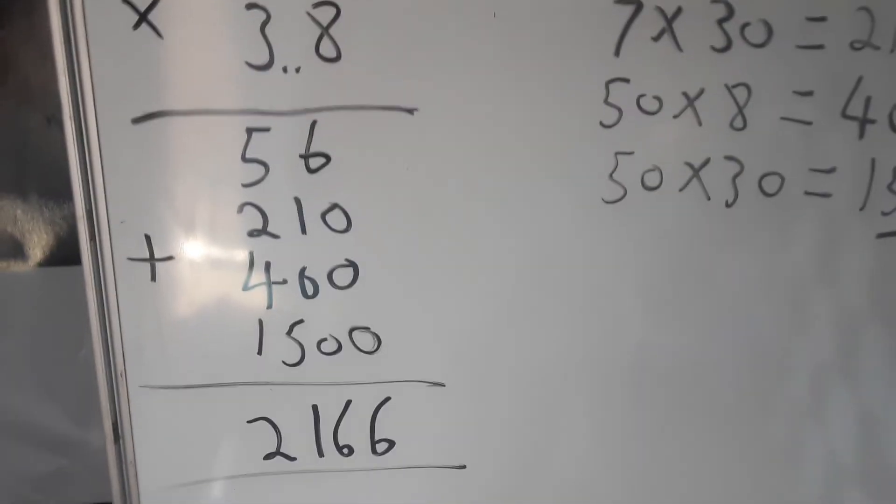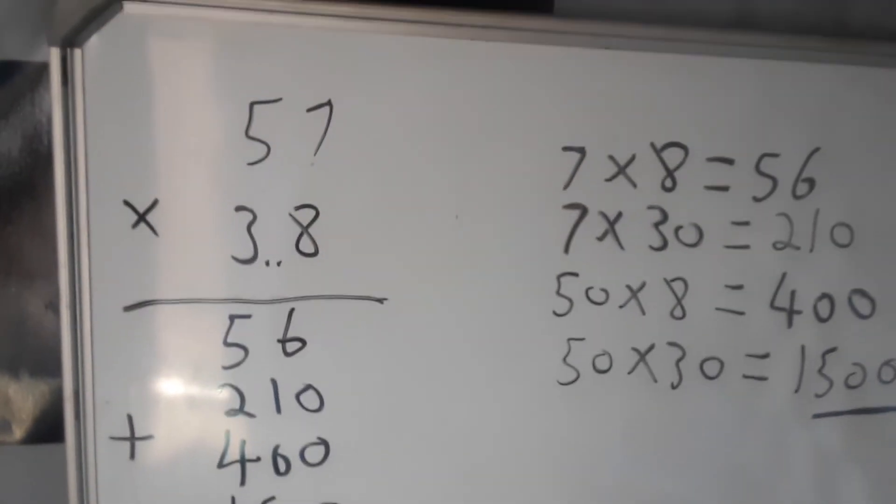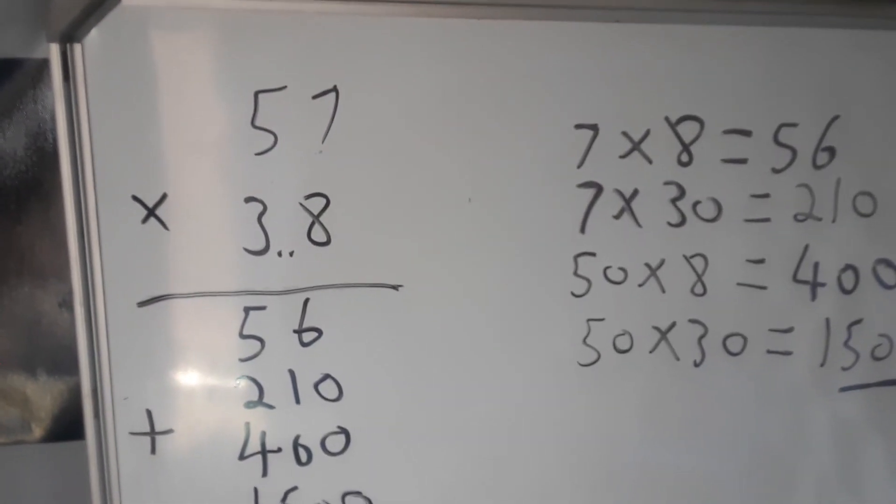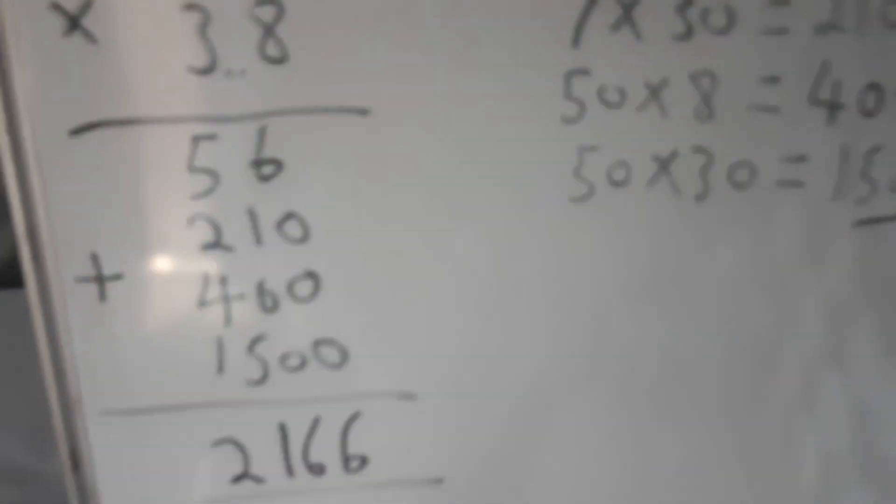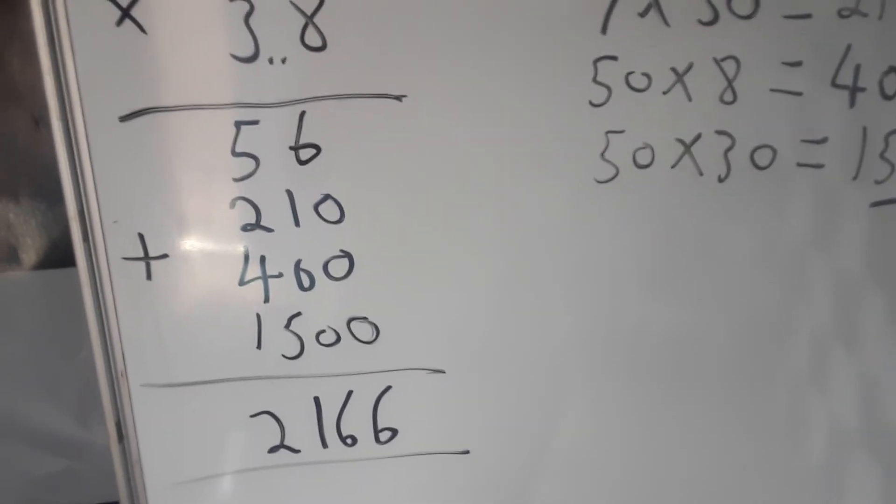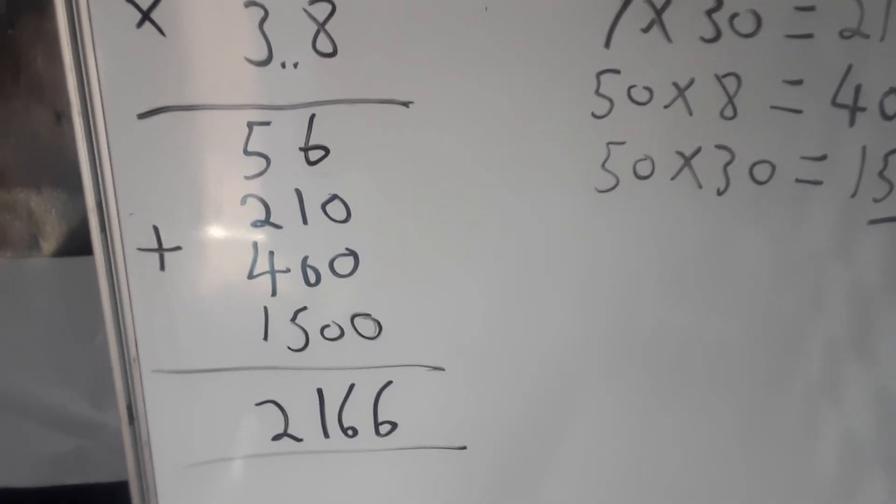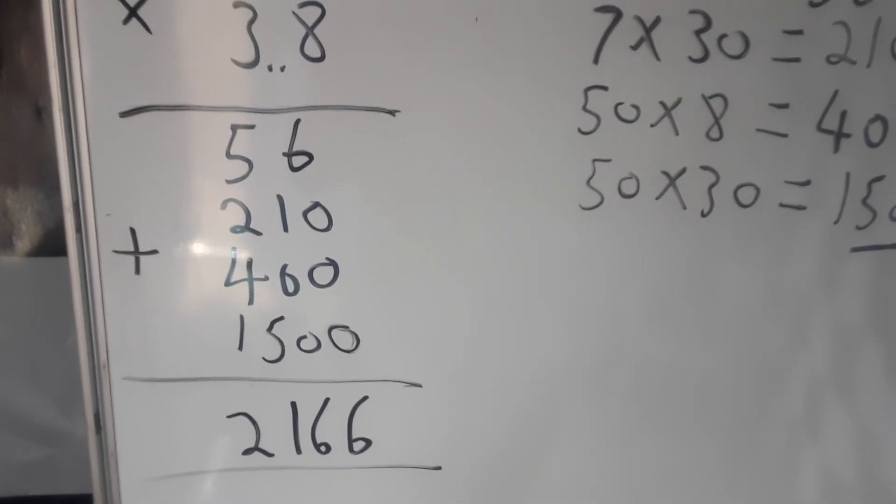You can confirm with the calculator, say 57 times 38, and add all of these numbers together and see if you get 2166. Thank you all for your time, don't forget to subscribe.